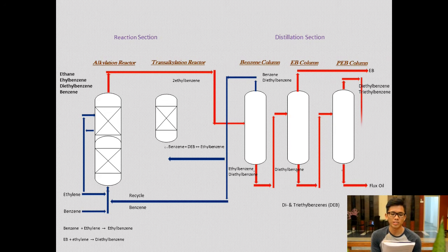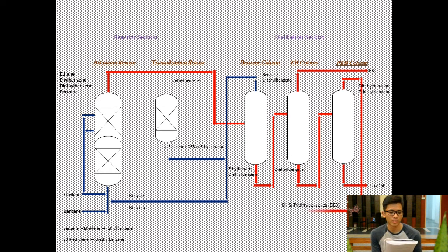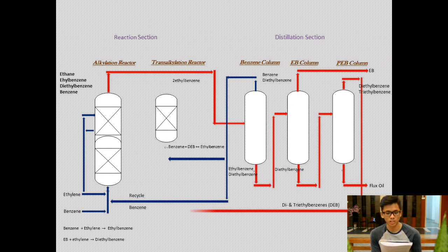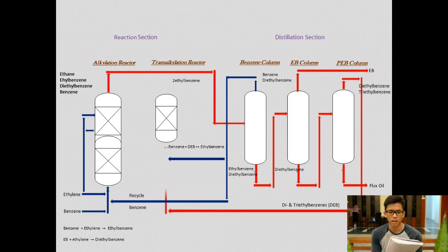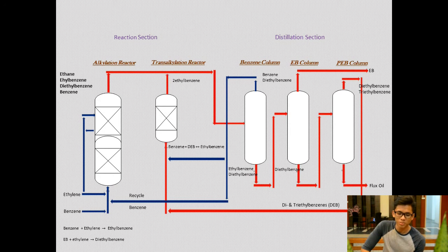The ethyl benzene stream is then mixed with the output from the transalkylation reactor — containing ethyl benzene, diethyl benzene, and benzene — and fed to the benzene column, where it is processed as described before to produce ethyl benzene. That is the overall process for the EB1 process.